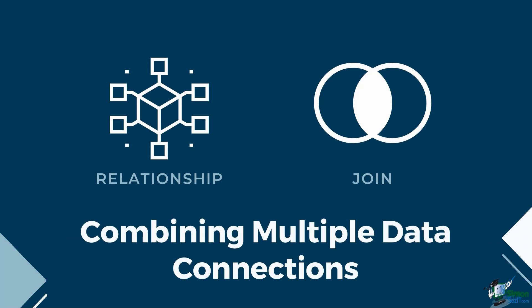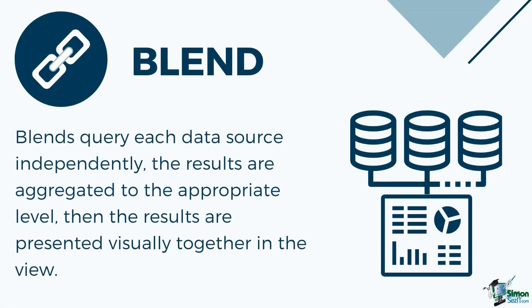In an earlier lesson, we identified how the method of joins and relationships differ. Both methods are applied when combining multiple data connections from one data source. But what if we need data from different data sources? Blends, unlike relationships or joins, never truly combine the data. Instead, blends query each data source independently. The results are aggregated to the appropriate level, then presented visually together in the view. Because of this, blends can handle different levels of detail and they work with published data sources.